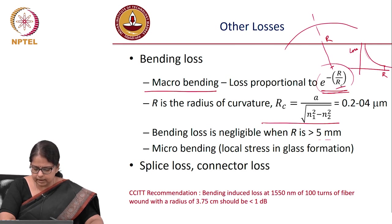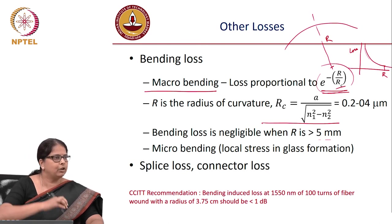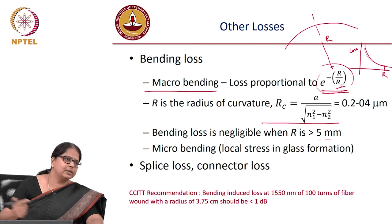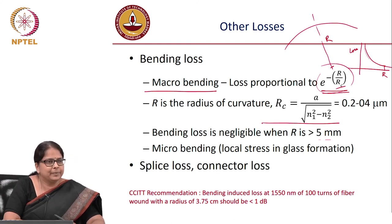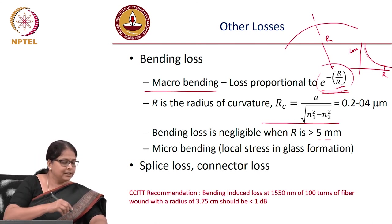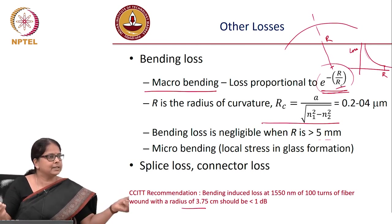The ITU (CCITT) recommendation states that bending-induced loss at 1550 nm for 100 turns of fiber wound at 3.75 cm radius should be less than 1 dB. Bending loss measurements use many turns because more turns increases the total measured loss. Fiber manufacturers must demonstrate compliance: 100 turns at 3.75 cm radius with less than 1 dB additional loss.